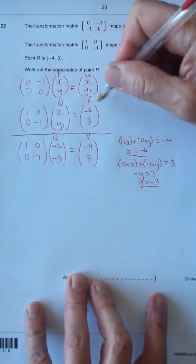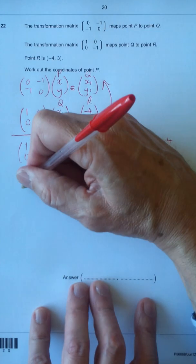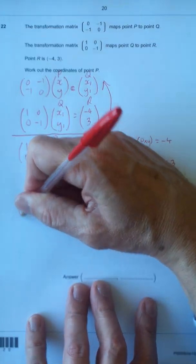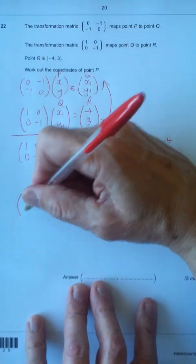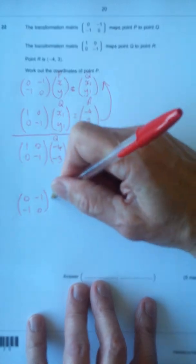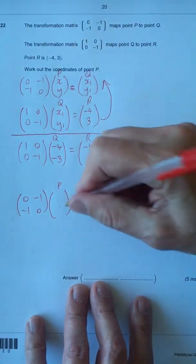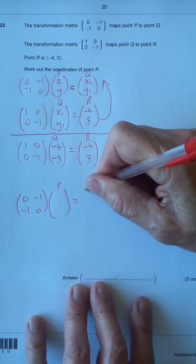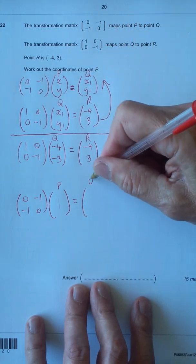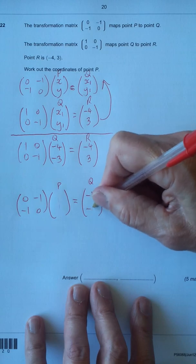So now we've done this bottom part here, we're going to work back up to the top part. So I'll write that bit down. We've got 0, minus 1, minus 1, 0. And then this first part is P. And we've got the X and Y values, but I won't put them in, because we're going to find them in a minute. And then the top part is Q, which we've now found, which is minus 4, minus 3.